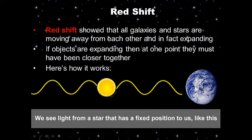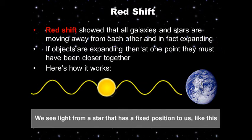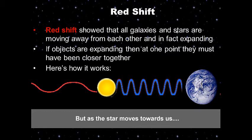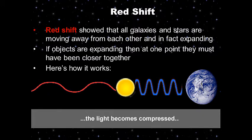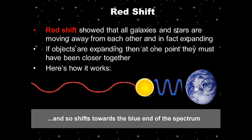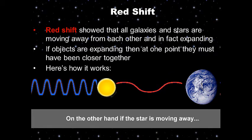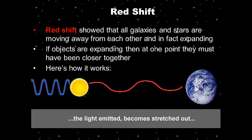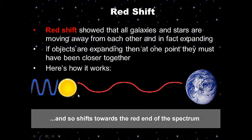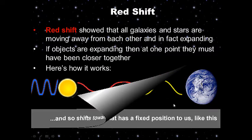Redshift showed that all galaxies and stars are moving away from each other — the universe is expanding, getting bigger, like an explosion where everything moves outward. If objects are expanding, then at one point they must have been closer together. Look at this animation as it starts over.